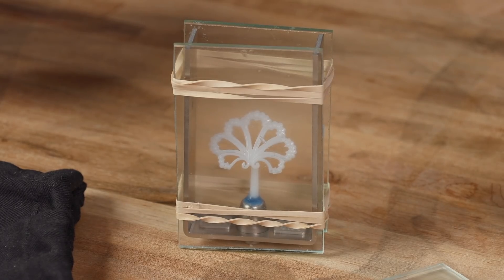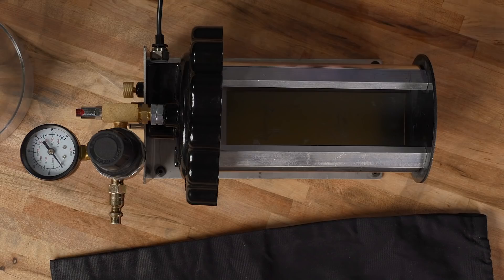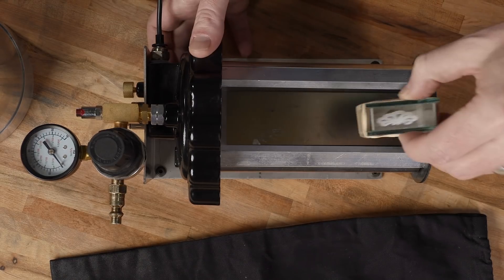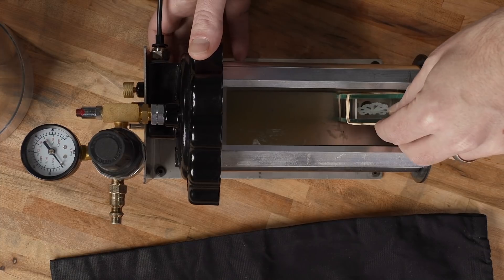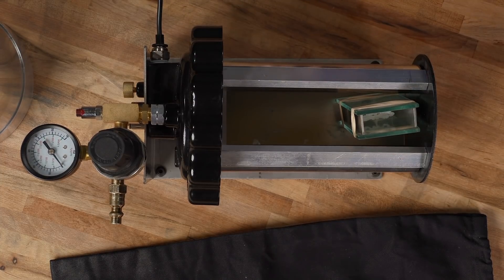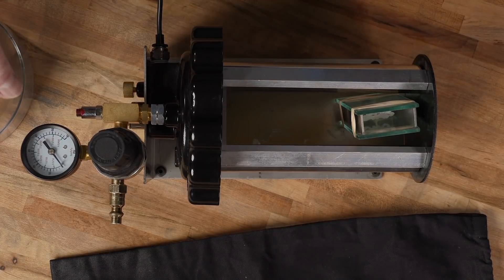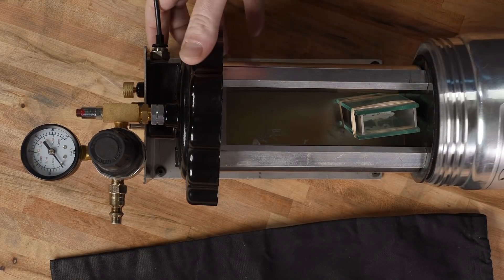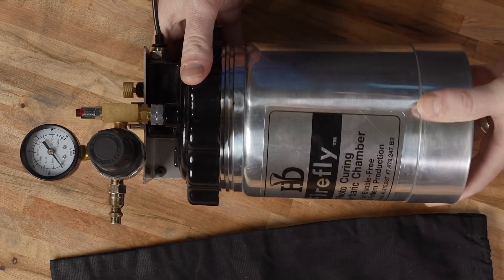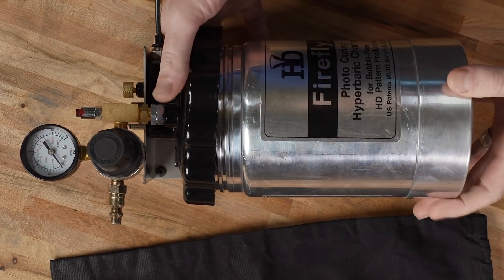To cure new molds, we're going to use a clear RTV compound. Make sure to mix it to the manufacturer's instructions. Once we have it poured in, we're going to place it into the hyperbaric chamber and that will eliminate all of the bubbles that have been incorporated during the mixing process. So we place it in, install the case onto the Firefly, and screw it in.